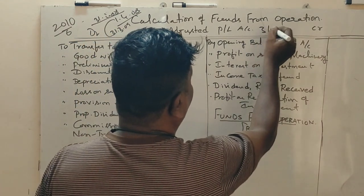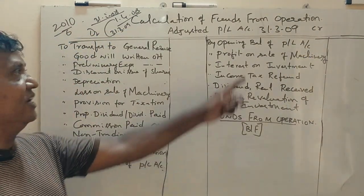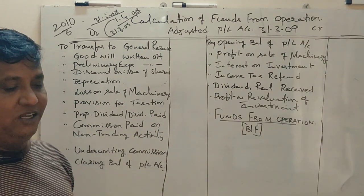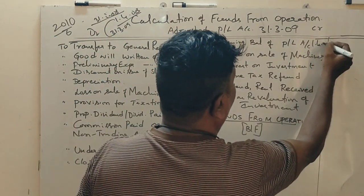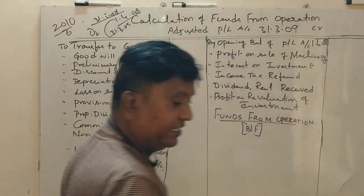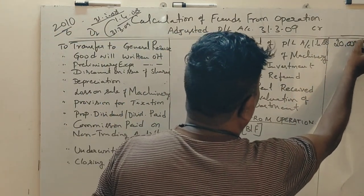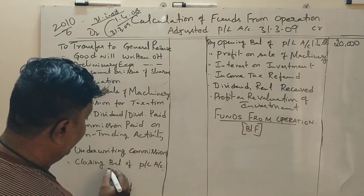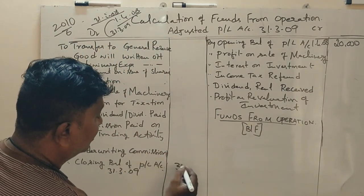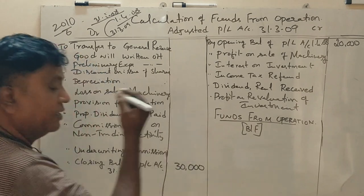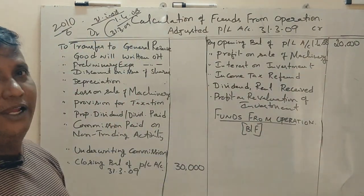The adjusted profit and loss account is for 31st March 2009, with 1st April 2009 as the reference. Since 2009 is the closing date, the opening balance of profit as at 1st April 2008 is Rs. 20,000, and the closing balance as at 31st March 2009 is Rs. 30,000.